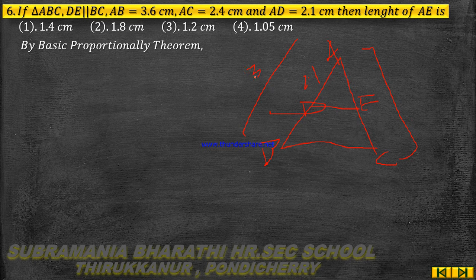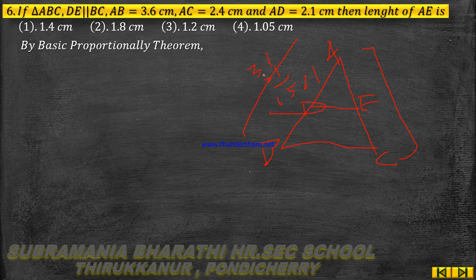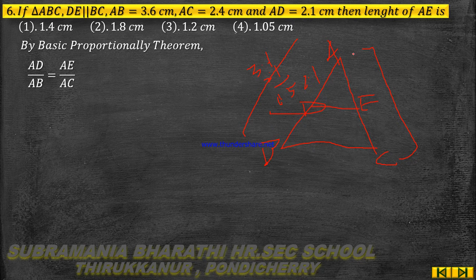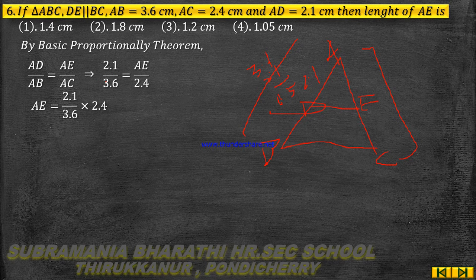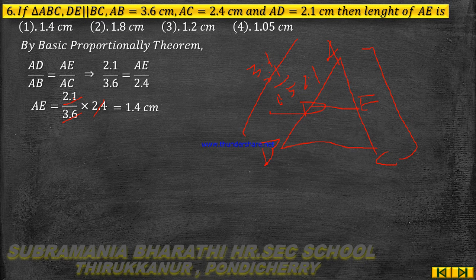AB equals 3.6 cm, AC equals 2.4 cm, AD equals 2.1 cm. So DB equals AB minus AD equals 3.6 minus 2.1 equals 1.5 cm. Now, AD by AB equals AE by AC. Therefore 2.1 divided by 3.6 equals AE by 2.4. So AE equals 2.1 divided by 3.6, multiplied by 2.4. AE equals 1.4 cm. 1.4 is the correct answer.